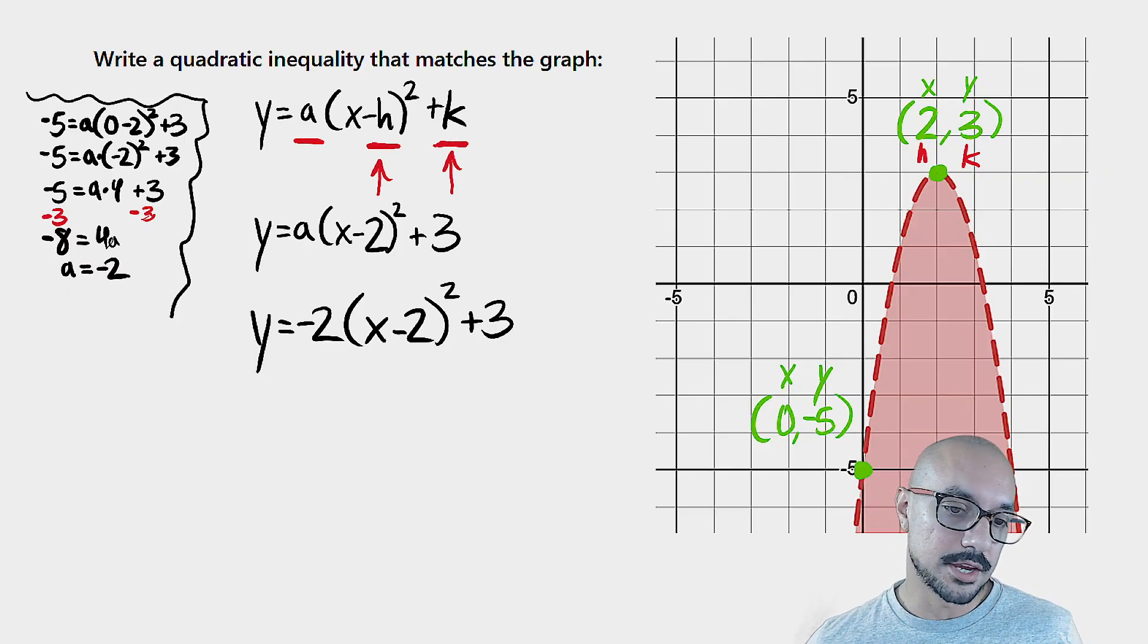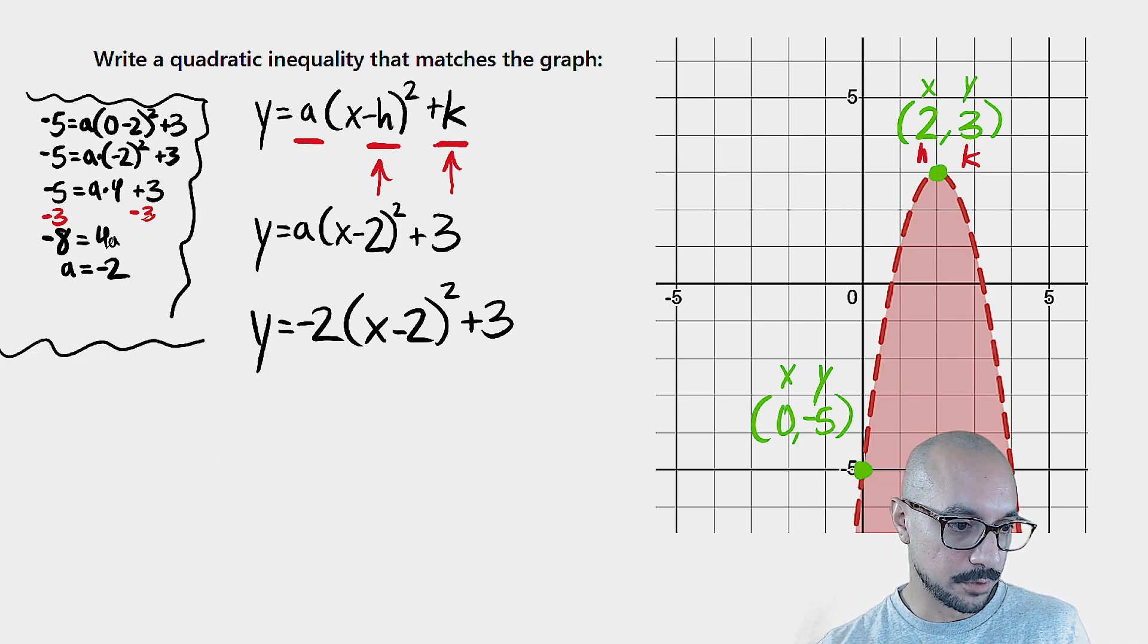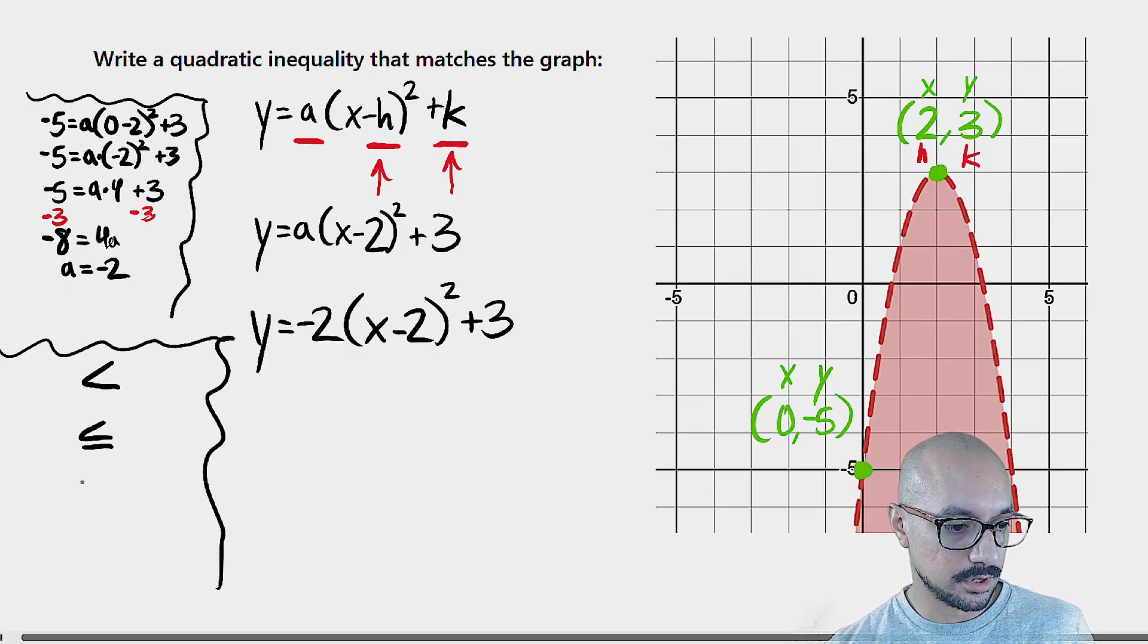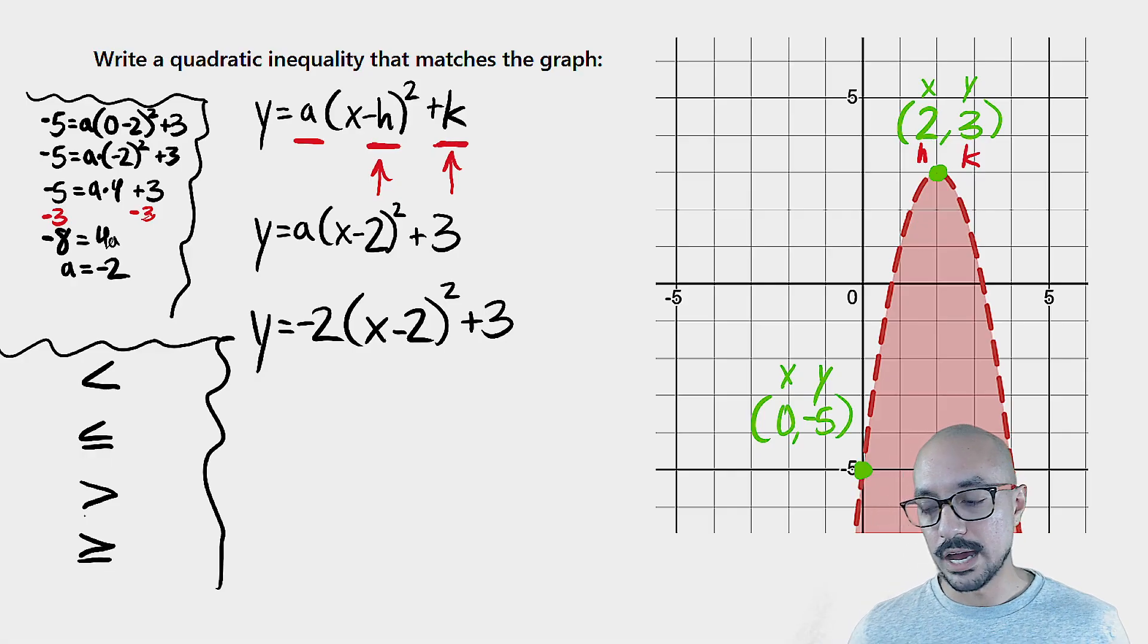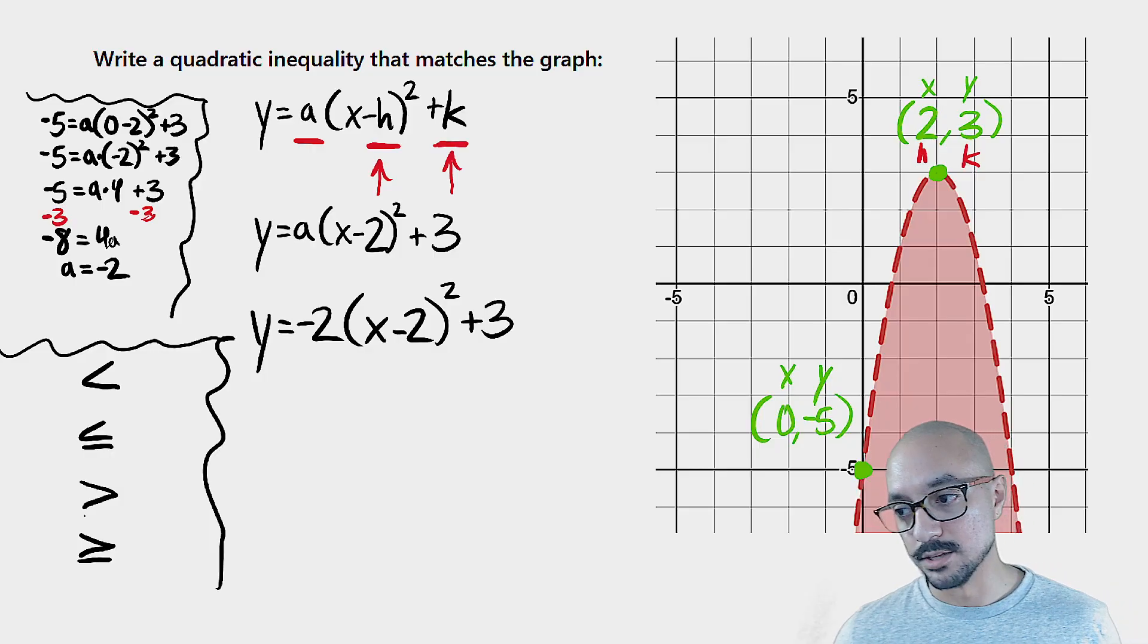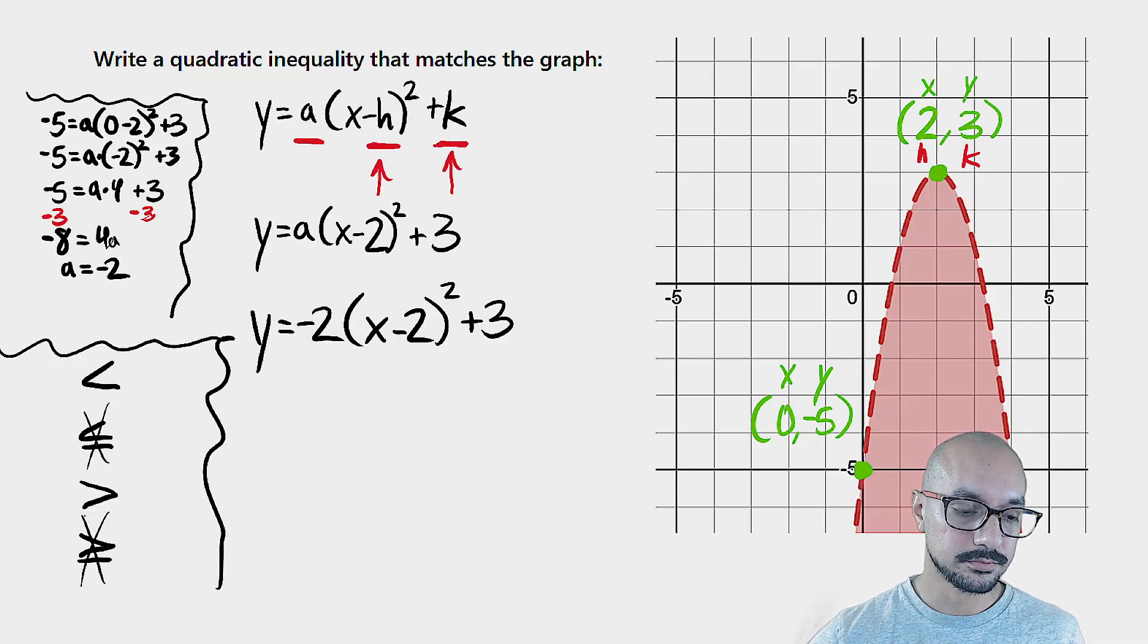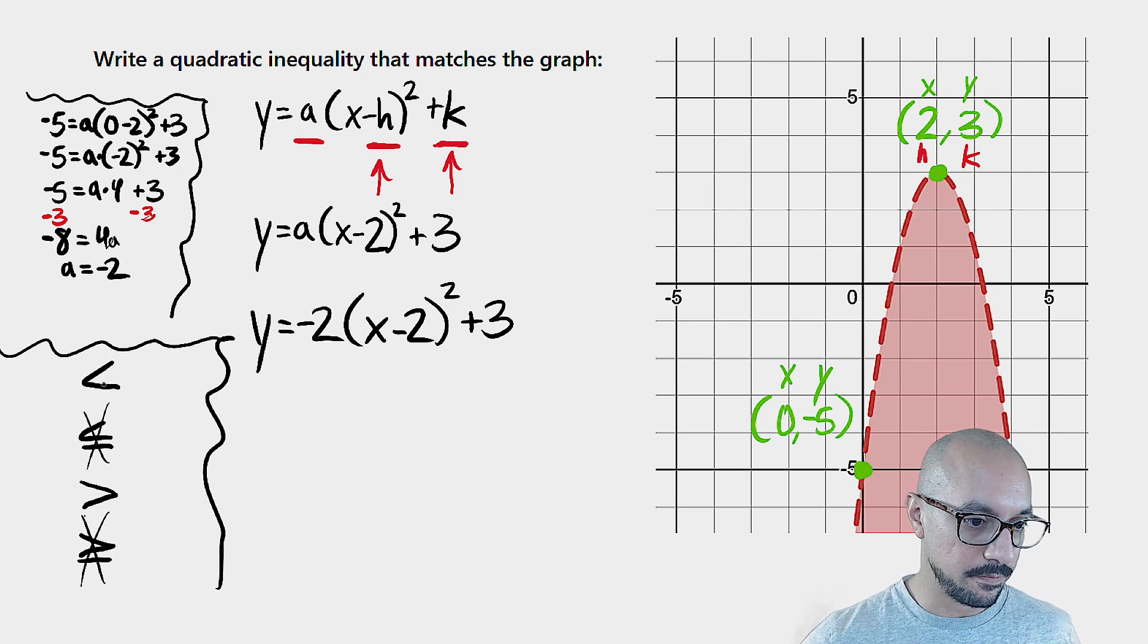The next thing that I could figure out is which inequality sign we're going to use. So there's four to pick from. We could have less than, less than or equal to, greater than, and greater than or equal to. Right off the bat, because our boundary parabola is dashed, I don't want anything that could be equal to.